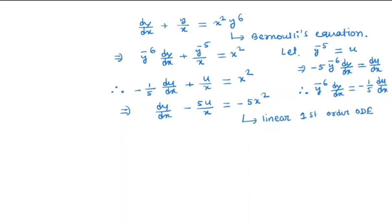We already discussed how to solve a linear first-order ODE using the integrating factor method in my previous videos — I will give the link in the description box. So first, we find the integrating factor: I(x) = e to the power of the integral of minus 5/x dx.